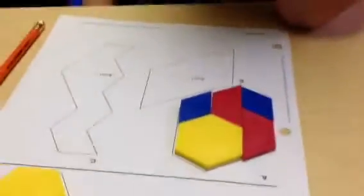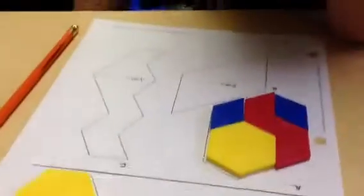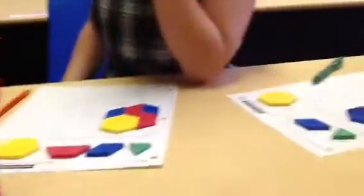So now we're going to find the value of the pattern blocks we used to cover Design A. Okay? So we can find the area of the design by adding the value of the individual pattern blocks. Alright, so let's look at our value.